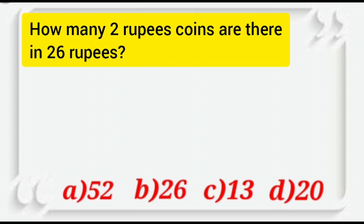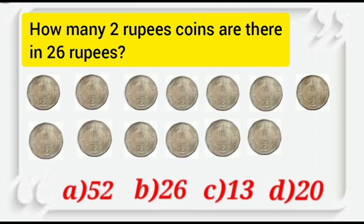Here we will use a 2 rupee coin to solve the problem. This is a 2 rupee coin. Now, we will see how many 2 rupee coins together make rupees 26. One coin has value equal to rupees 2. We will use such coins to make rupees 26 in total.